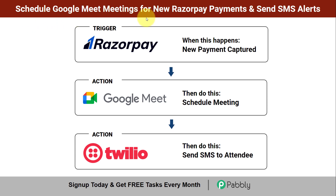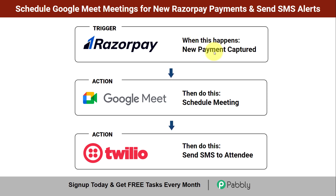How to schedule Google Meet meetings for new Razorpay Payments and send SMS alerts automatically. If you are using Razorpay Payment Gateway for taking appointments, this video is for you. Here I am going to show you an amazing automation — after every payment is captured, how you can schedule a meeting into Google Meet and share the same meeting link to the attendee via SMS.